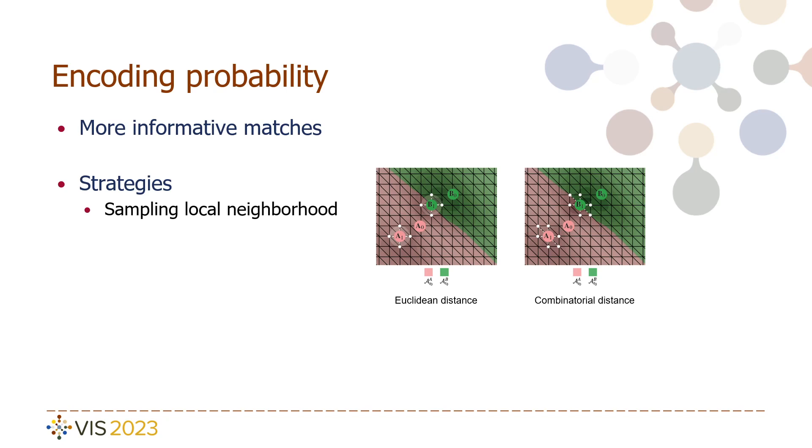For the first strategy, we define a distance threshold and a distance function that assigns distances between vertices in the domain. On the right, we show two examples of distance functions: Euclidean distance and combinatorial distance within the grid. The big color points are extrema while the small white points are sample points in the local neighborhood.